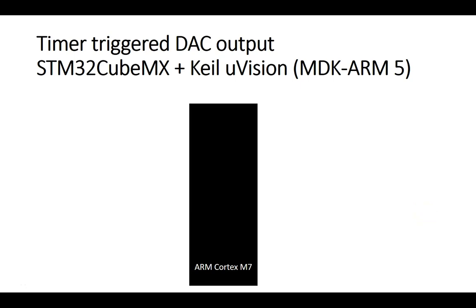Welcome. This tutorial is going to be on the timer-triggered DAC output. We want to produce an output on the DAC channel at a specific timing interval. For this we'll use three basic modules: a DAC, a timer, and an array that consists of certain values that we want to send out on the DAC.